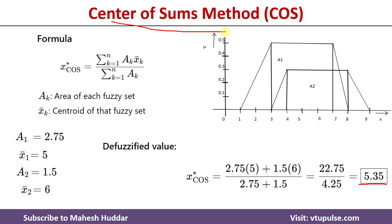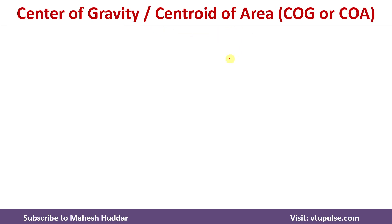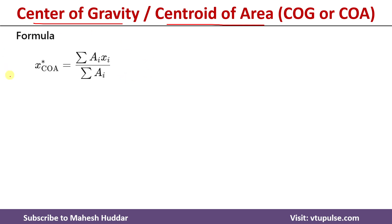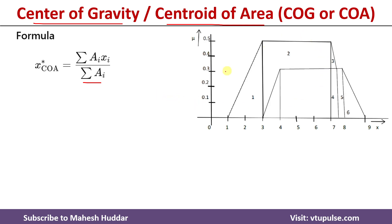This is by using the center of sum method. Now I will discuss the next method, that is the center of gravity or centroid of area. Here we will use this formula: summation of Ai into xi, divided by summation of Ai. What we will do is divide the whole fuzzy sets into sub-areas. Here we can see that the first area is a triangle, the second is a rectangle, the third is a sub-triangle, the fourth is a small rectangle, the fifth is a small rectangle, and the sixth is a triangle. For those sub-areas, we need to find the areas and the centroids.